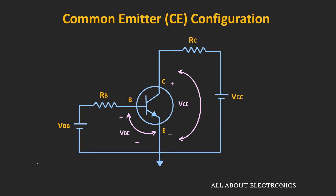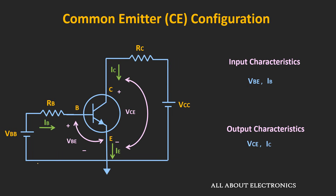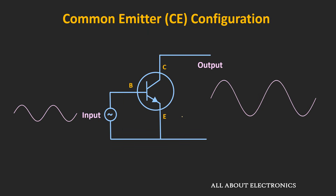Whenever the BJT is used as an amplifier, it is biased such that the base-emitter junction gets forward biased and the collector-base junction gets reverse biased. Once we apply the DC voltage sources to the BJT, current and voltage will establish in the circuit. The voltage VBE and IB are the parameters on the input side, while VCE and IC are the parameters on the output side. After biasing the BJT in the active region, if we apply a sine wave as an input, then we should get an amplified signal at the output. Whether we get a proper amplified output depends on how well the BJT is biased in the active region.